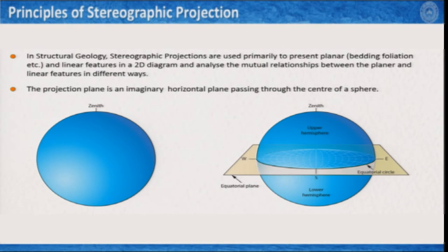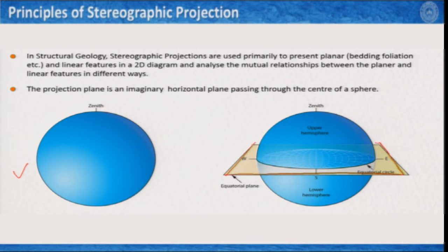Let us go to the concept of stereographic projection. A stereographic projection generally, as we have seen, is a circular area. This circle is achieved by inserting a horizontal plane inside a sphere. As you can see, on the left side you have a sphere, and if I insert this green horizontal plane through the equator of this sphere, it creates a circle in the middle — this is your stereonet or projection plane.